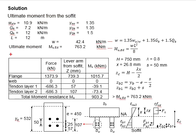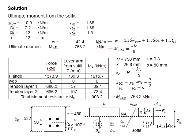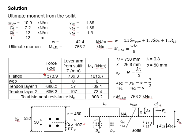Now we need to calculate the total moment resistance of the member itself, considering bending at the soffit of the beam. To determine the moment, you multiply the compressive force in the concrete by its lever arm, minus fp1 times its lever arm, and minus fp2 times its lever arm. The compressive force in the flange is calculated in the previous calculation steps.